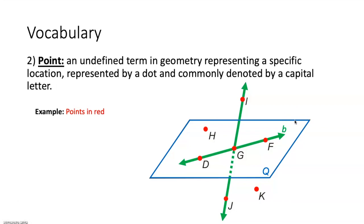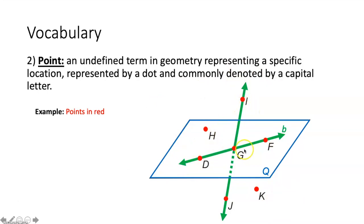A point is an undefined term in geometry representing a specific location, represented by a dot and commonly denoted by a capital letter. These red dots are our points — a specific location that doesn't take up any mass or space. Points are denoted by capital letters. Here you can see H, I, D, G, F, J, and K would be our points. B and Q do not represent points because there's no little red dot next to them.